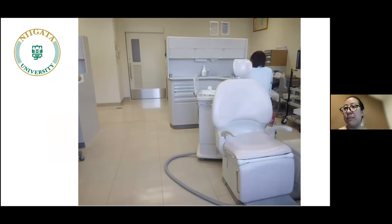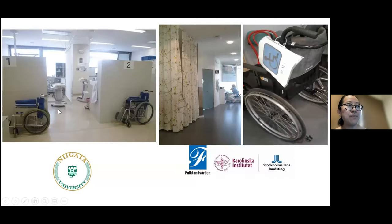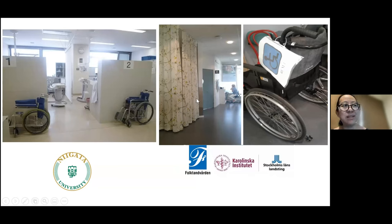For the dental unit itself, we prefer the cart type so we can move it around rather than the arm type. This is also illustrated by a Japanese example — the cart type can be moved so we can treat patients on a stretcher. The dental unit can be four-hinge or five-hinge. There should also be storage space for wheelchairs — in Japan there's cabinet space, and in Stockholm a curtained corner area is used.